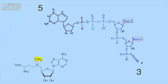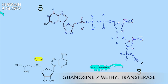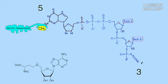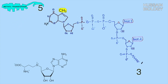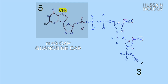Now we only need a methyl group for the guanosine cap. This methyl group is donated from the S-adenosylmethionine (SAM) molecule. By the help of guanosine-7-methyltransferase enzyme, the methyl group is transferred from SAM to the guanosine at the seventh position — that's why we call it the m7G cap. This forms the 5' cap of mRNA, called the cap zero structure, since only one methyl group is attached.